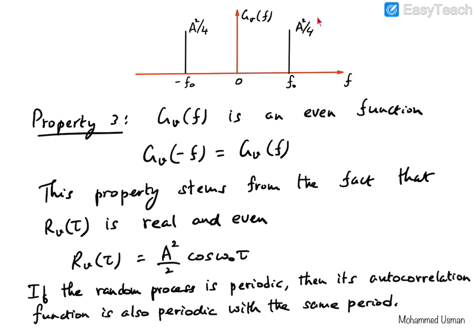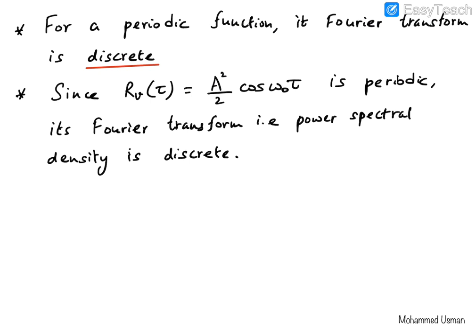Finally, since the autocorrelation function of the randomly phased sinusoid is periodic, its Fourier transform — the power spectral density — is a discrete function of frequency. This completes our verification of the four properties of the power spectral density using the randomly phased sinusoid as a simple example.